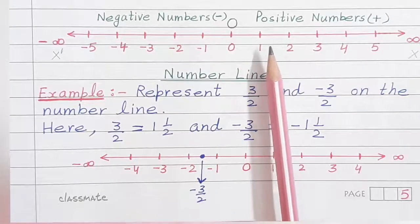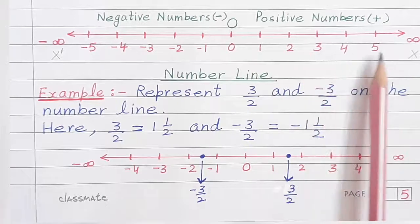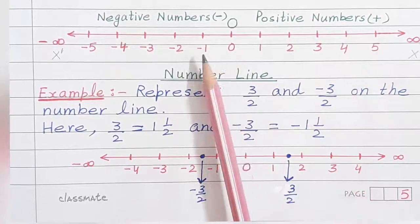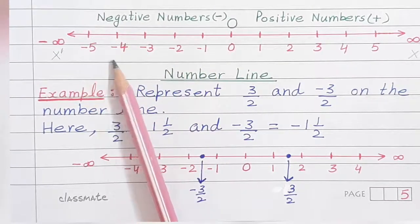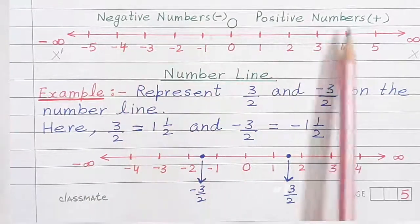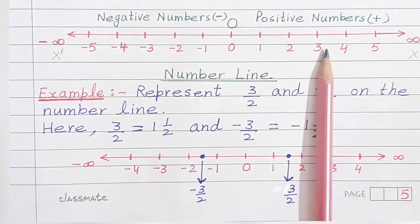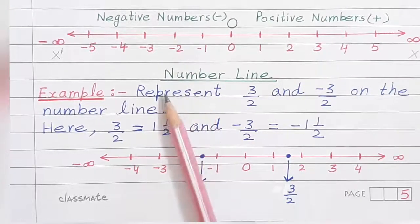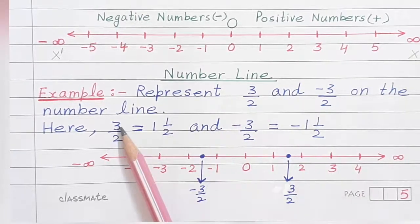Now label the points as 1, 2, 3, 4 on the positive side and minus 1, minus 2, minus 3, minus 4 and so on on the negative side. So this is the general form of a number line.